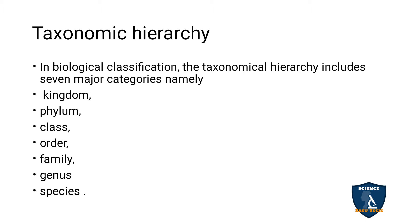Hierarchy is the arrangement based on biological information. In biological classification, the taxonomical hierarchy includes seven main categories.